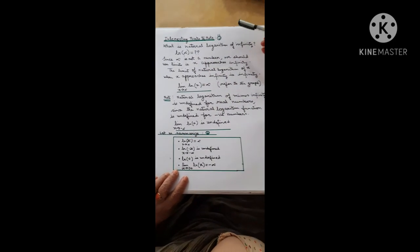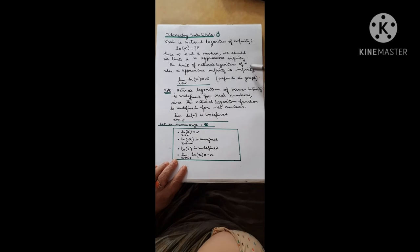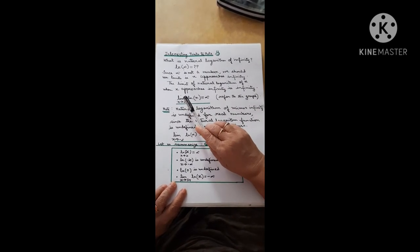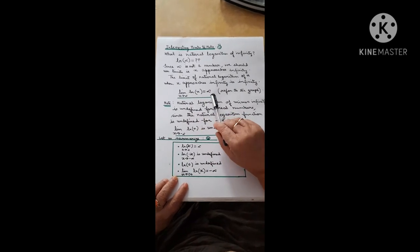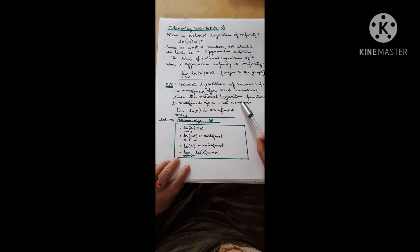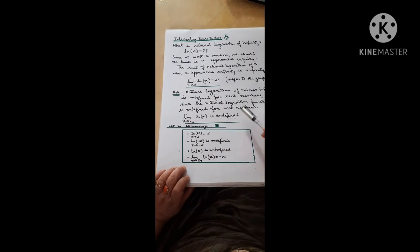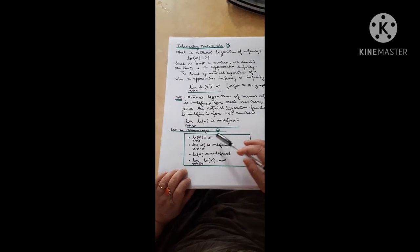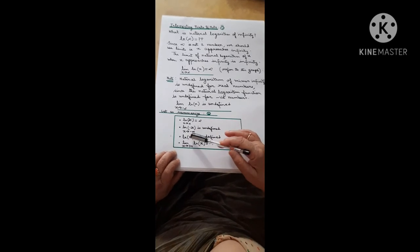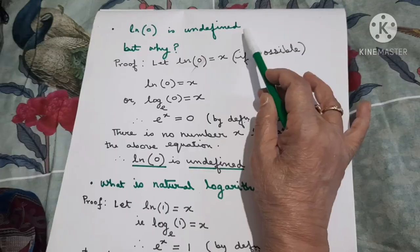What is the natural logarithm of infinity? Since infinity is not a number, we use limits. The limit of ln x as x tends to infinity is infinity. Note: the natural logarithm of minus infinity is undefined for real numbers, since the natural logarithm function is undefined for negative numbers. To summarize: the limit of ln x as x tends to infinity is infinity; the limit as x tends to minus infinity is undefined; and ln(0) is undefined.